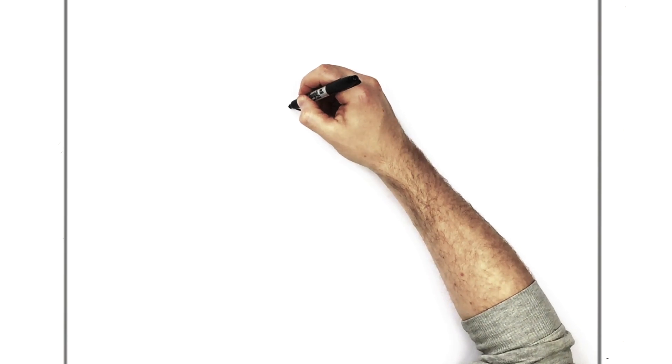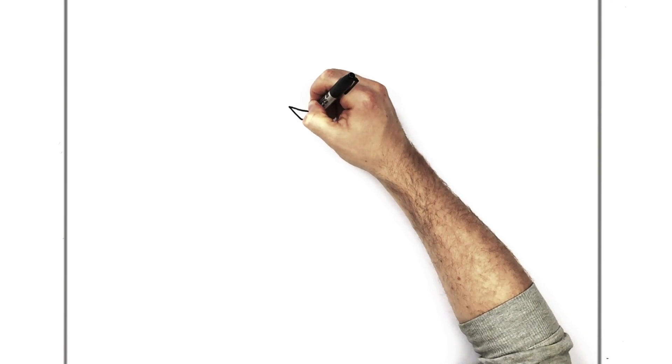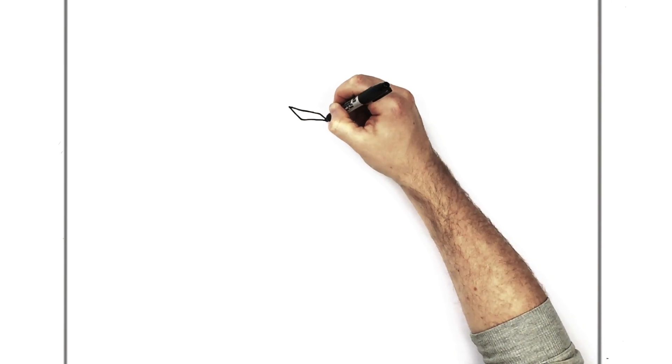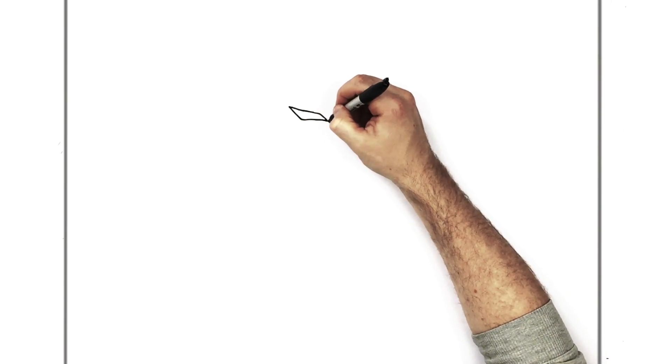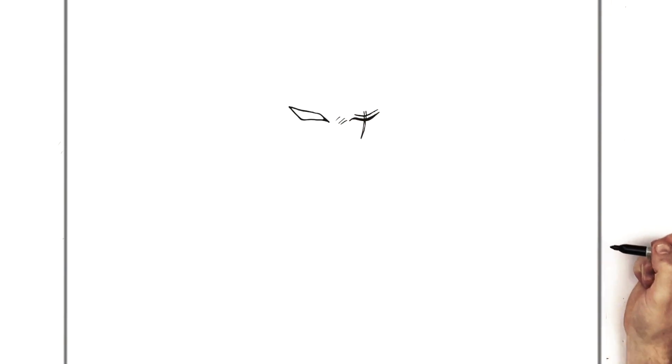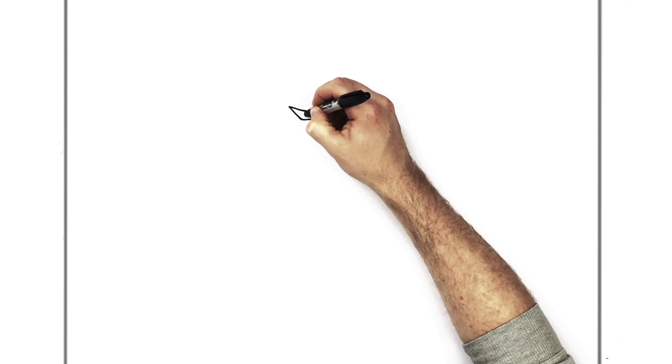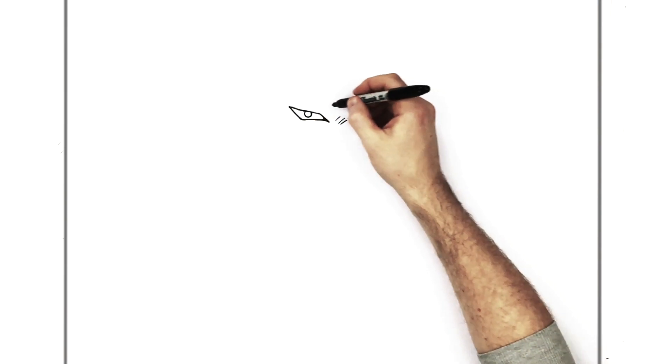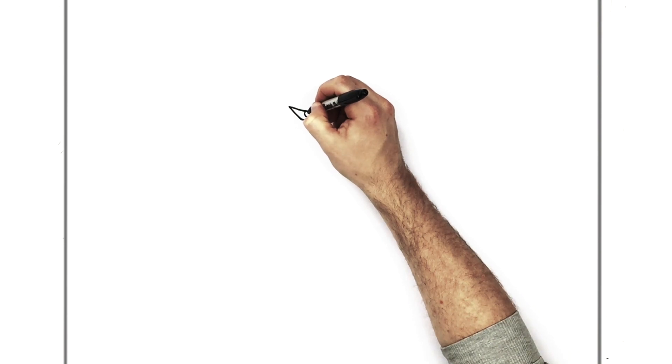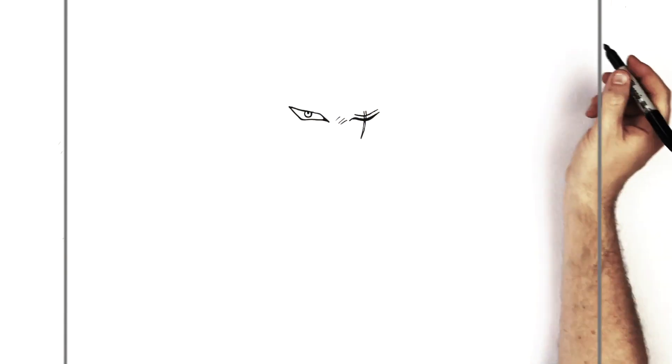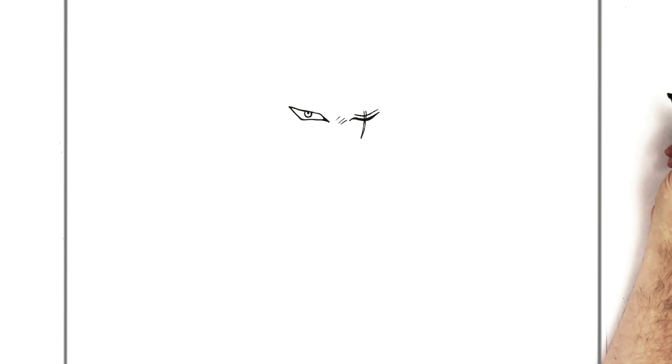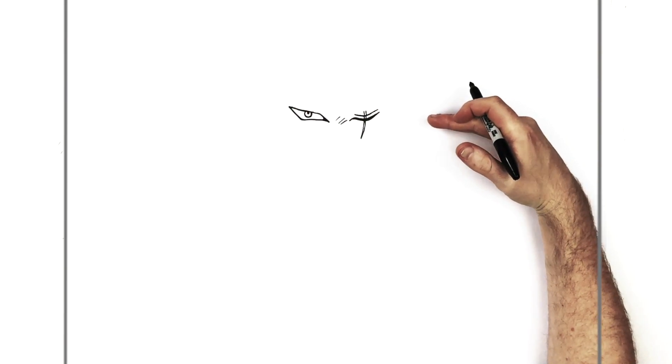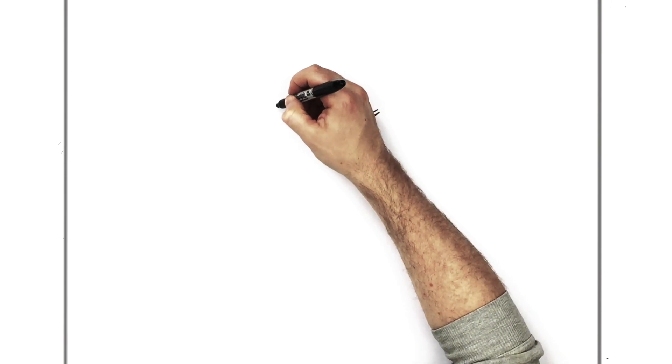And then this will come back down this way for the bottom eyelid and then back down to here. So there's an iris just underneath, in the middle, just there, and his pupil, like so. So then, like I said, the bandana comes right across the top here. So we might as well draw it in.